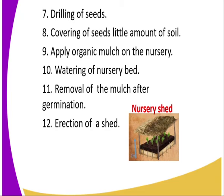Then you apply organic mulch, which is applied to reduce the rate of evaporation and to conserve soil moisture. Watering of the nursery bed is also done to supply moisture to the growing seedlings. Then we have the removal of mulch after germination. Finally, you erect a shed to provide shade and reduce the rate of evapotranspiration.